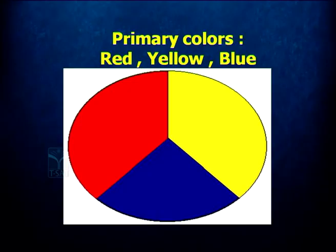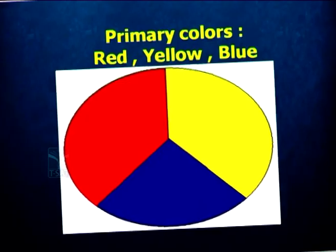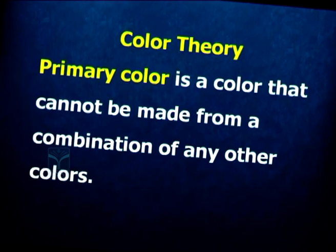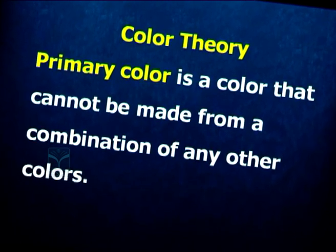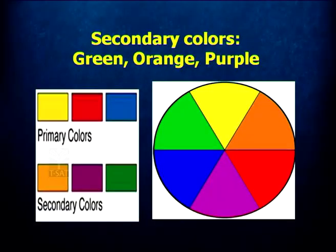What we see now is the color wheel — the early form of the color wheel, which gets more complicated as we go ahead. The primary colors are red, yellow, and blue. Primary colors are the colors not formed by the combination of any other colors; they are the first colors. When you combine two primary colors, you get secondary colors. The secondary colors are green, orange, and purple.